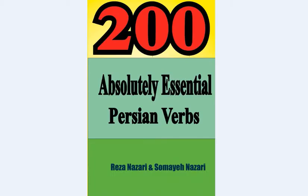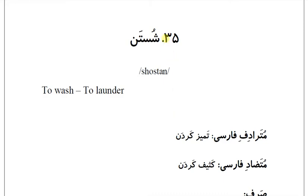Hello guys, my name is Reza. In this series of videos I review the most common Persian verbs from my recent book '200 Absolutely Essential Persian Verbs' — you can find the link to the book below this video. Today I'm going to review verb number 35: شستن (shustan), meaning 'to wash.'